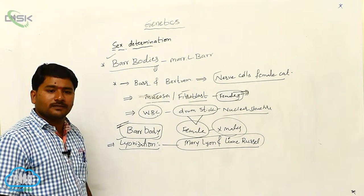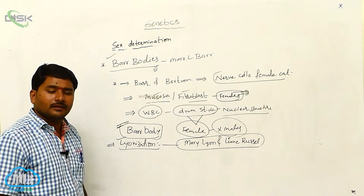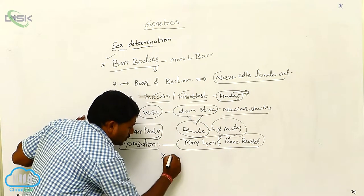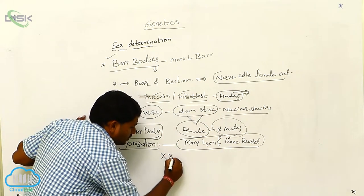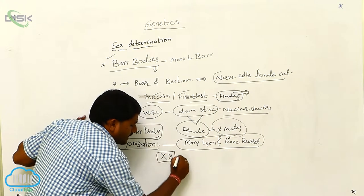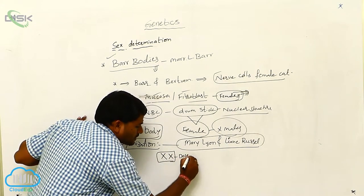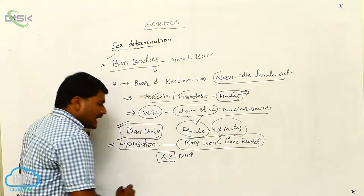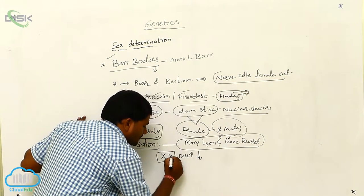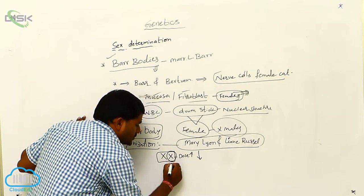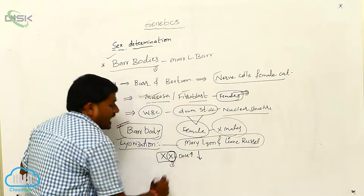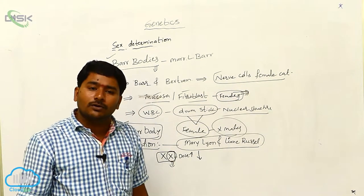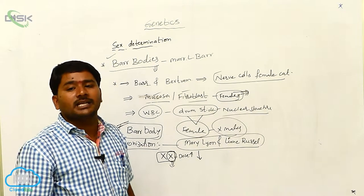What is the lyonization process? In the female, when two X chromosomes are present, the gene dose will be more. In order to reduce the dose, one of the two X chromosomes undergoes heterochromatinization.